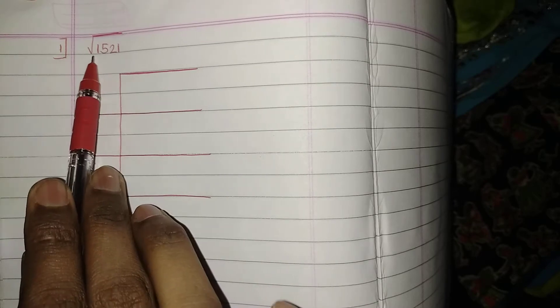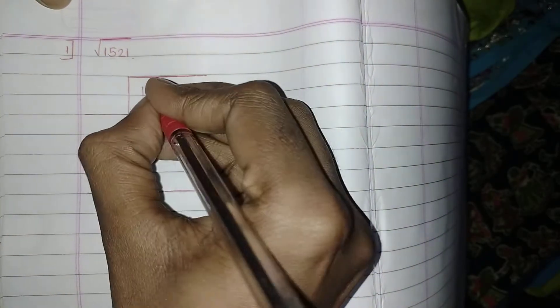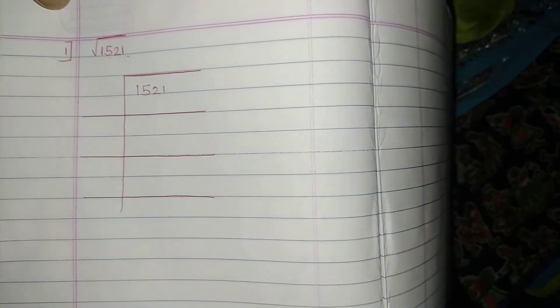Hello students, now let us learn how to find the perfect square number. To find the perfect square of 1521, let us draw like this and place the number 1521 here.